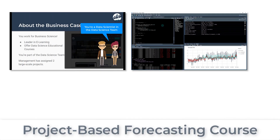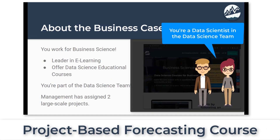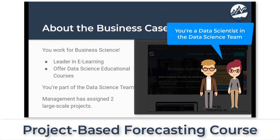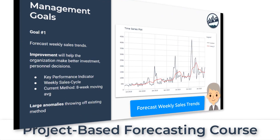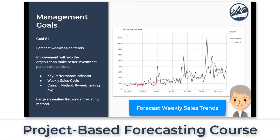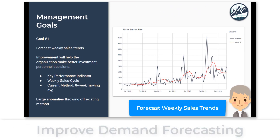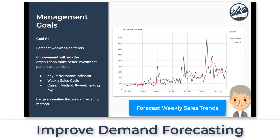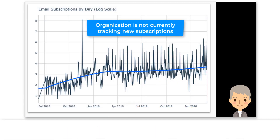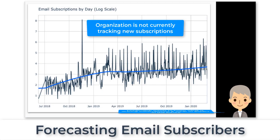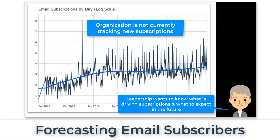Here's the scenario. You are forecasting data related to key performance indicators for an e-learning company. Your primary goals are to improve sales demand forecasting by 10% or more, and to set up a system for forecasting email subscriptions.